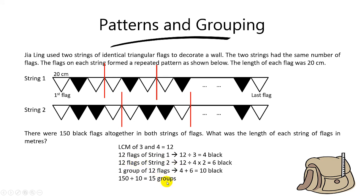So now to find the length of each string, you simply take 15 times 12. Because in 1 group, there are 12 flags. So 15 times 12, and since we know that 1 flag is 20 cm, which is equal to 0.2 meters, when you take 15 times 12 times 0.2 meters, the answer is 36 meters.